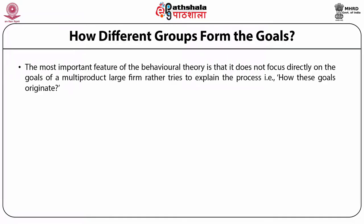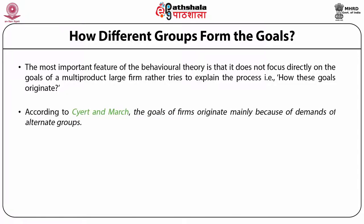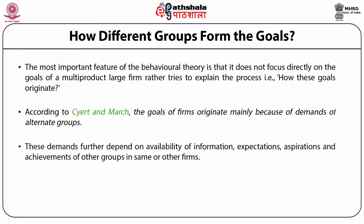How different groups form the goals. The most important feature of the behavioral theory is that it doesn't focus directly on the goals of a multi-product large firm, but rather tries to explain the process — that is, how these goals originate. According to Cyert and March, the goals of firms originate mainly because of demands of alternate groups. These groups further depend on availability of information, expectations, aspirations, and achievements of other groups in same or other firms.